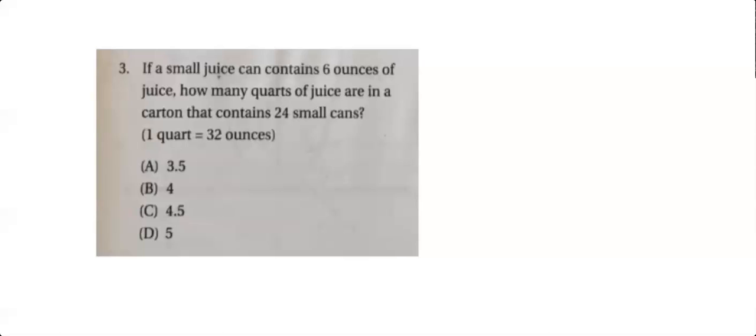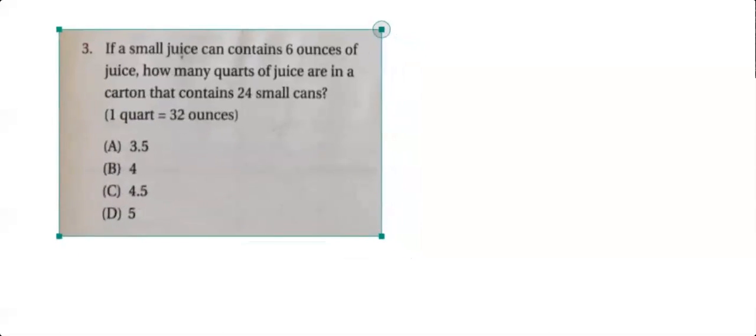And the third question here. If you'll just pause the video now and give it a try and then come back, take a look at it. Okay, a small juice can contains 6 ounces of juice. How many quarts of juice are in a carton that contains 24 small cans? So we're dealing with quarts here. And each can has 6 ounces. And there's a carton that has 24 cans.